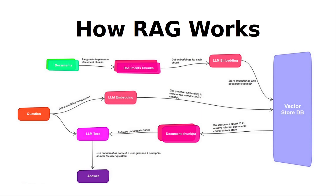Let's look at the architecture — how RAG works in the background using vector stores: retrieve the information, take that available information, and generate a response. RAG — retrieval augmented generation, retrieval increased generation.